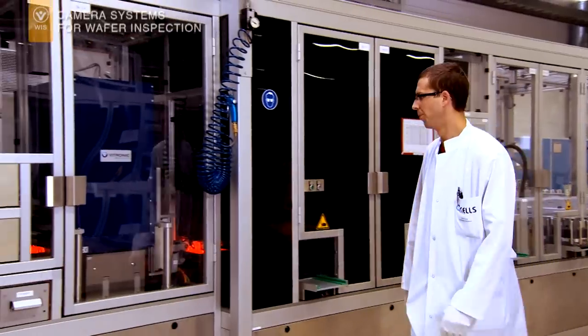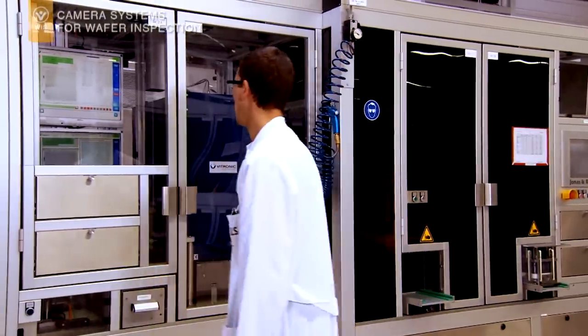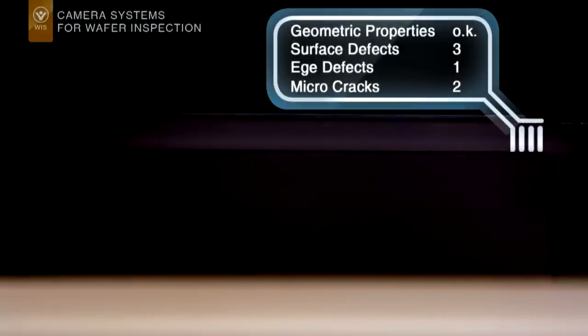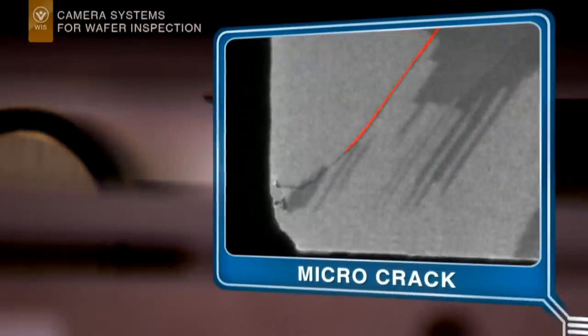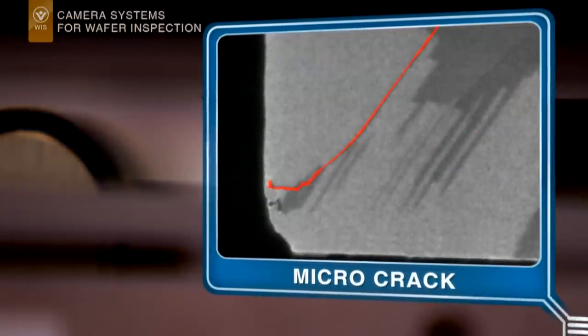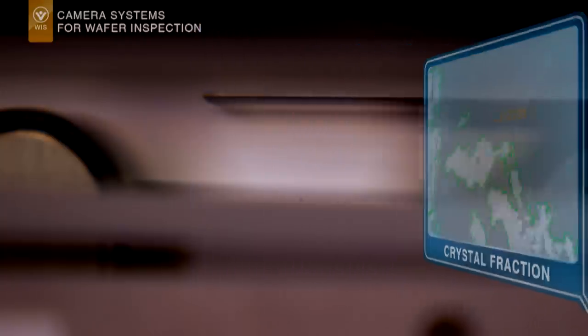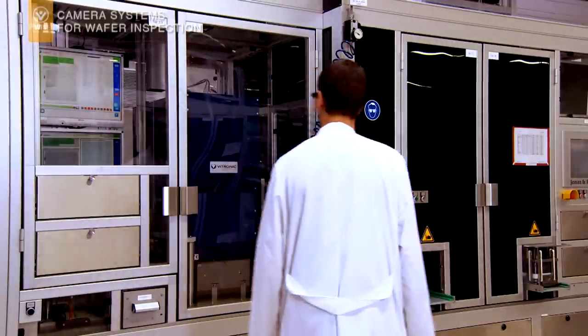Vinspec Solar WIS inspects the geometry, edges and surface of the wafer, not only identifies micro cracks precisely but also detects the granularity in multi and crystal fraction in quasi mono wafers and classifies reliably.